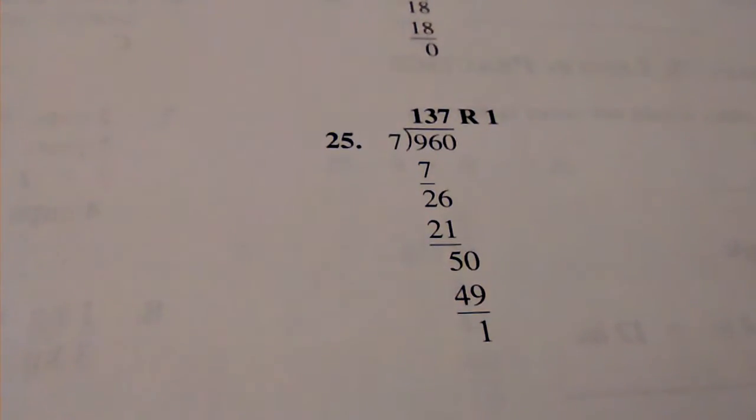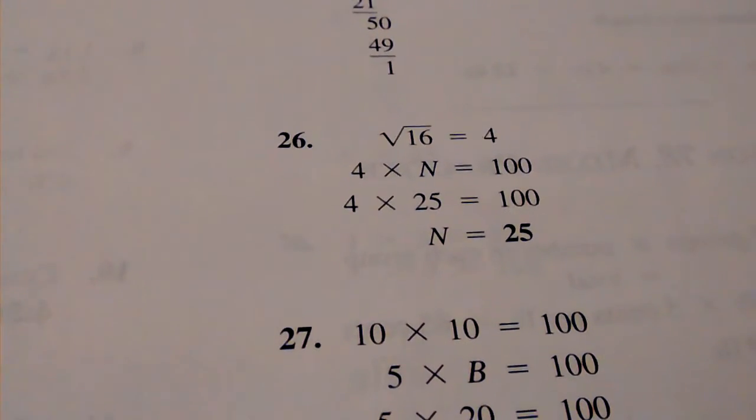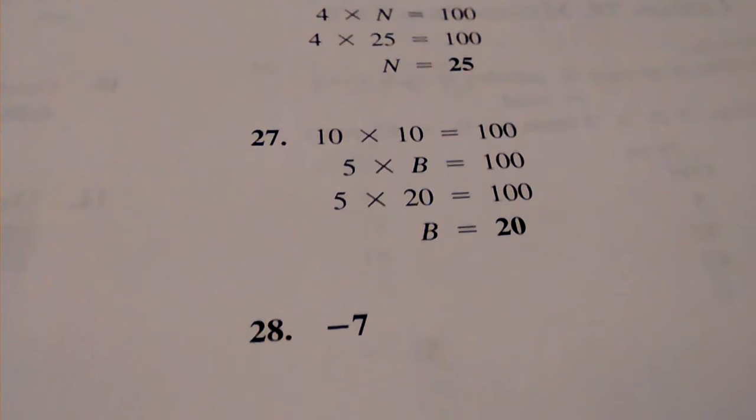Number 25, 137 remainder 1. Number 26, N equals 25. Number 27, B equals 20.